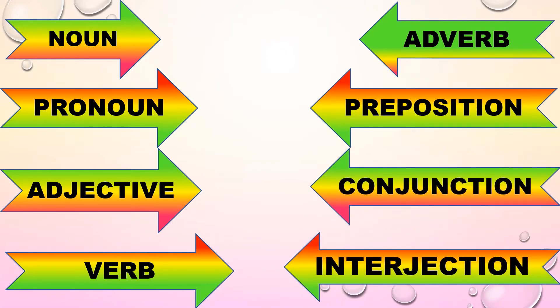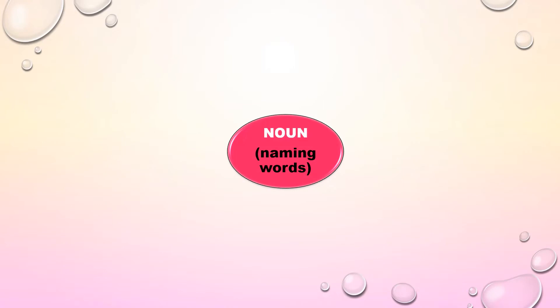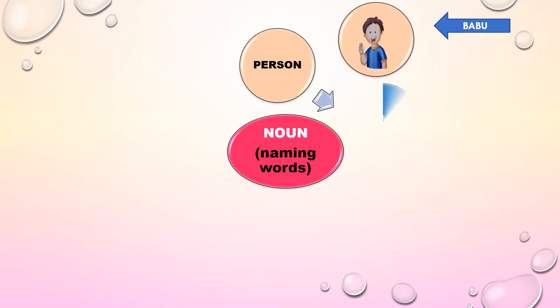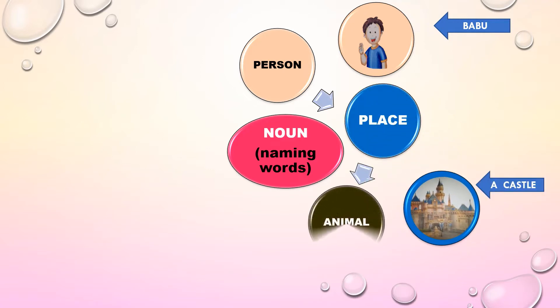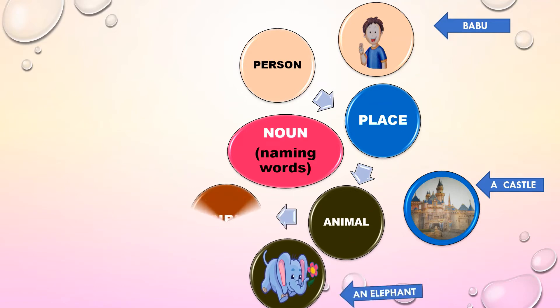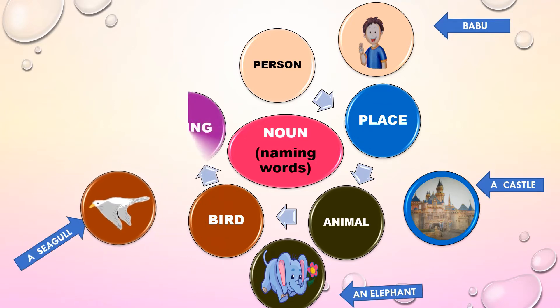Now let us see one by one in detail. A noun is a word used as the name of a person, place, or thing. In short, we can say naming words are called nouns. For example, it may be a name of a person like Babu, a name of a place like a castle, a name of an animal like an elephant, a name of a bird like a seagull, or a name of a thing like a bag.